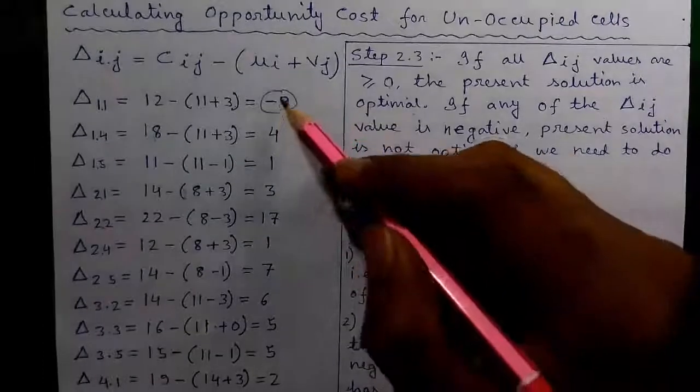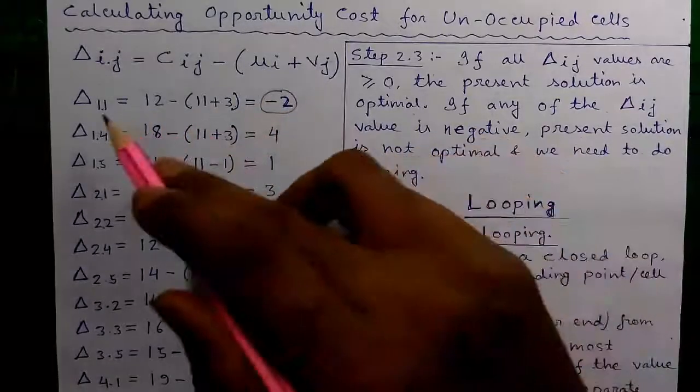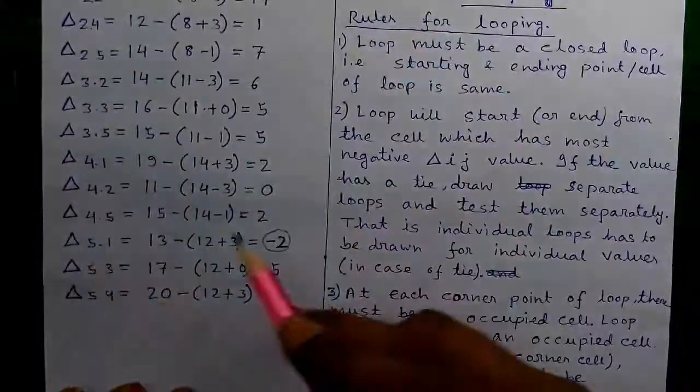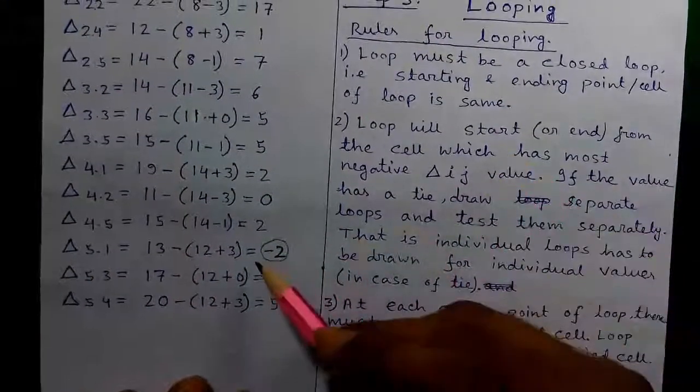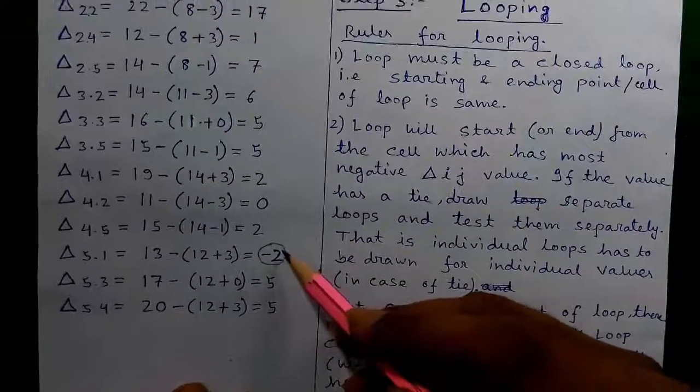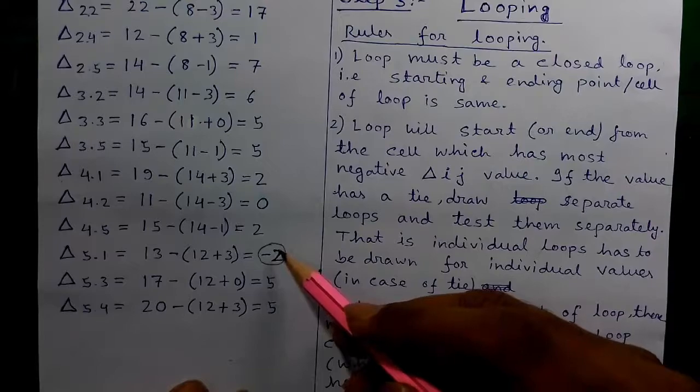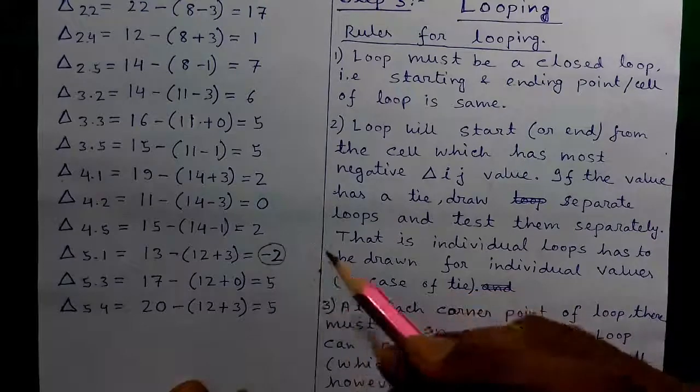In our case we had two negative values, one at del 1,1 position and another at del 5,1 position. So our current solution is not optimal and we need to do the looping to get the optimal solution.